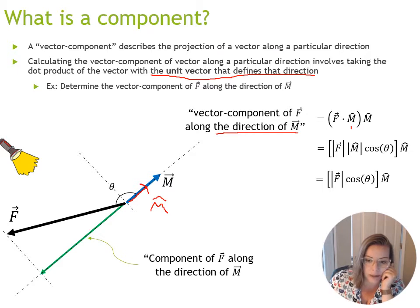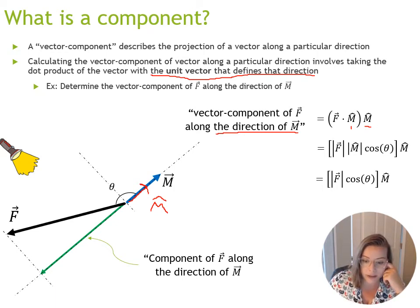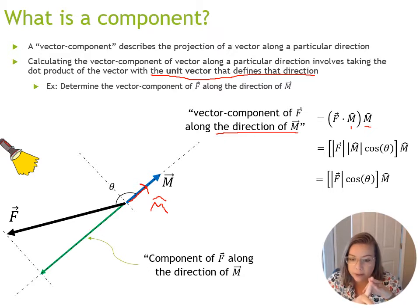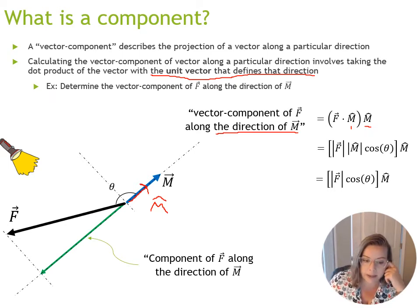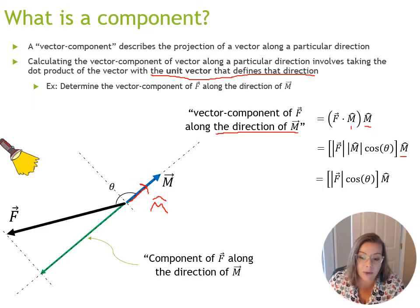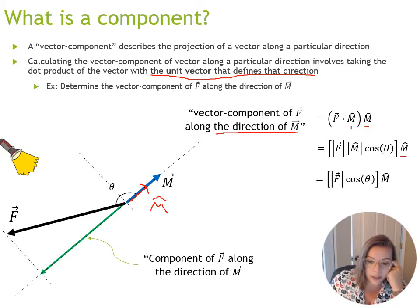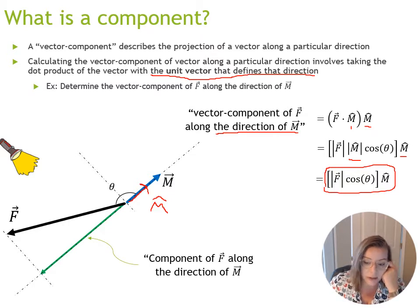After computing that dot product, you multiply the result by the unit vector that defines the direction of interest. The dot product equals the norm of F times the norm of unit vector M times the cosine of the angle theta between them. Since every unit vector has a norm of one, this simplifies to the norm of F times cosine theta, multiplied by M-hat. That M-hat at the end is what gives this component its vector nature — without it, we'd only be calculating a scalar. This simplified expression is the vector component of F along the direction of M.